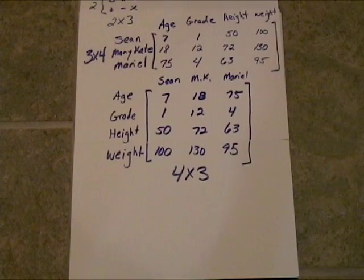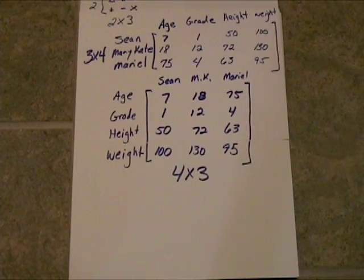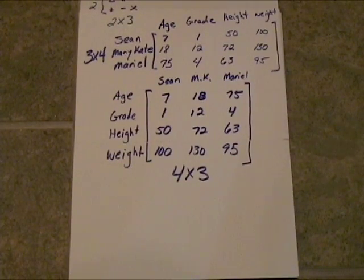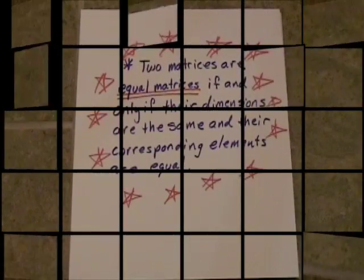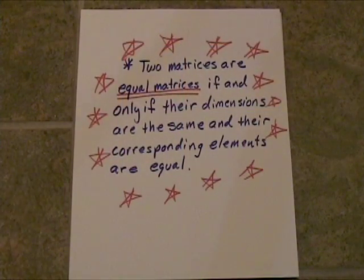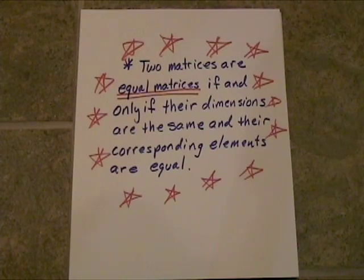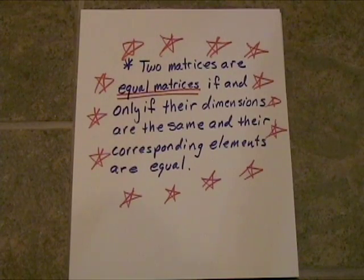These matrices, even though they hold the same data, are not equal. Two matrices are equal if and only if their dimensions are the same and their corresponding elements are equal.